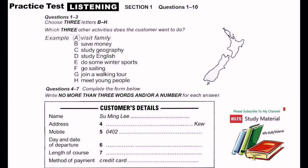The woman says she has relatives living there, so the first activity, visit family, has been circled. Now we shall begin. You should answer the questions as you listen, because you will not hear the recording a second time. Listen carefully and answer questions 1 to 7.